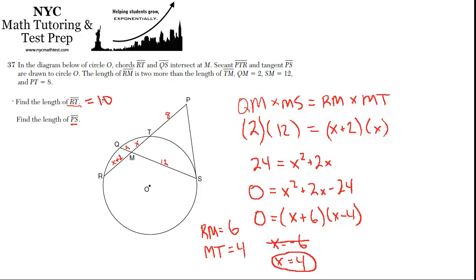Okay, for the second part, they want us to find the length of PS. So now, let's call—I don't want to call it X because we've already used X, so I'll call it Y. That's the length of PS. And there's this idea that when you have a secant and a tangent, we can set up a ratio.